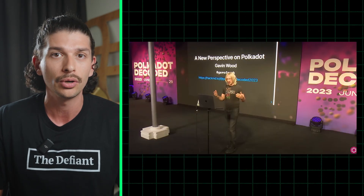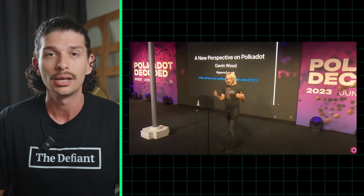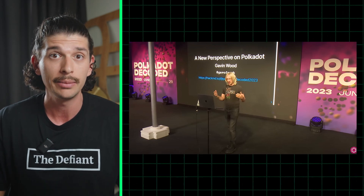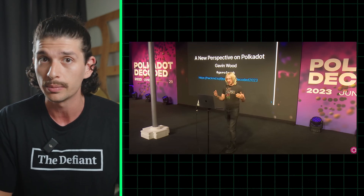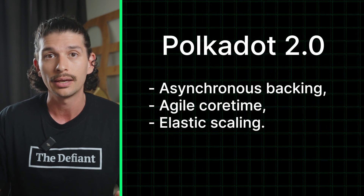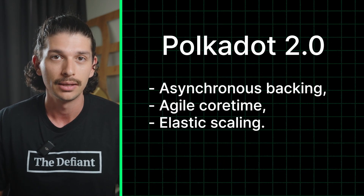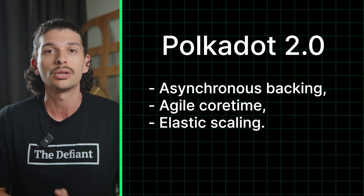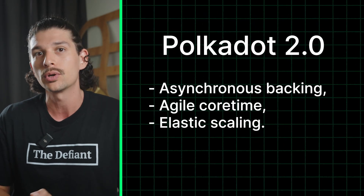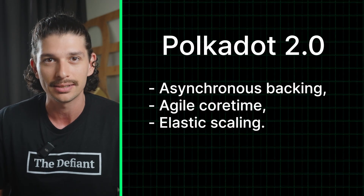The move to Polkadot 2.0 will feature a series of changes as to how Polkadot allocates its resources, namely through system upgrades like asynchronous backing, agile core time, and elastic scaling. Let's start with an overview of what asynchronous backing is before moving on to agile core time and elastic scaling.